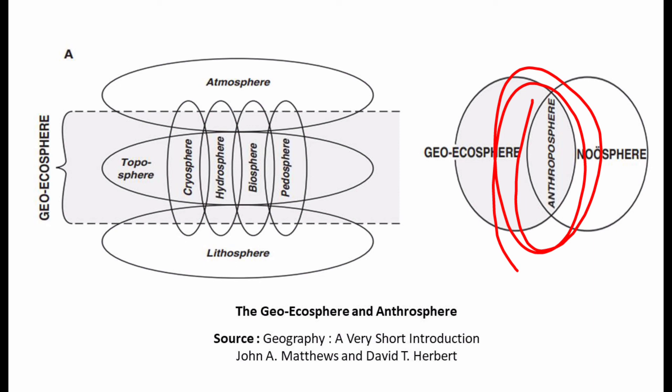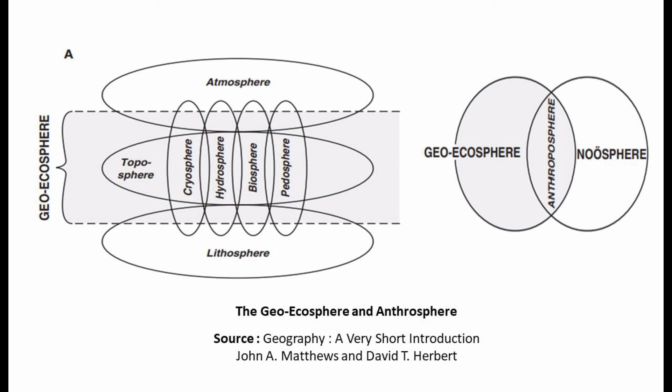The zone of overlap between the Geoecosphere and the mental ability of humans — the Noosphere — is termed the Anthrosphere, or the human-induced Geoecosphere. This is essentially the connection between physical geography and human geography: physical geography is the base, and human activities performed through mental ability on the Geoecosphere create this intersection. The Geoecosphere provides the scope of physical geography, while the Anthrosphere provides the scope of human geography.